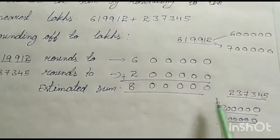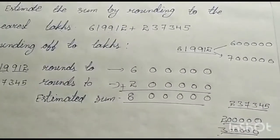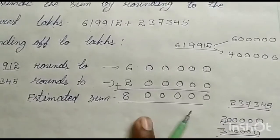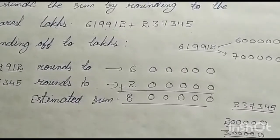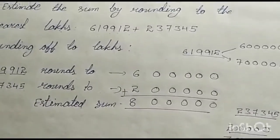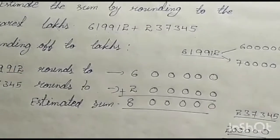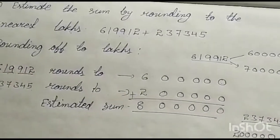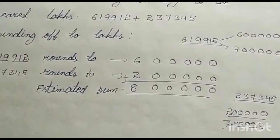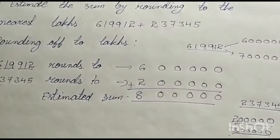The estimated sum is 8 lakhs. Did you understand, children? Like this, for nearest lakhs, there is another question in exercise 2.4 — the 10th question on page number 181. You have to do that on your own in your notebook.